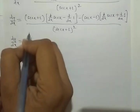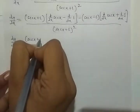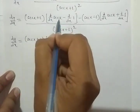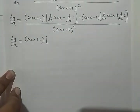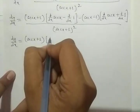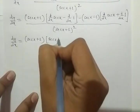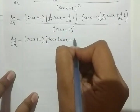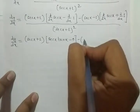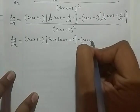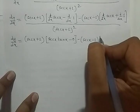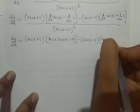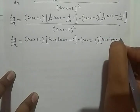dy by dx is equal to (sec x + 1) times [sec x tan x minus 0], minus (sec x - 1) times [sec x tan x plus 0], upon (sec x + 1) whole square. Here the differentiation of sec x is sec x tan x, and the differentiation of any constant is 0.